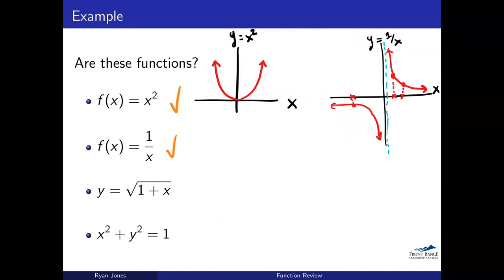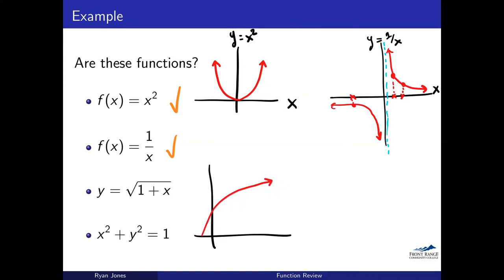Now we've got y equals the square root of 1 plus x. The square root function looks like a parabola turned on its side, and having 1 plus x just shifts it slightly to the left. That doesn't change whether it's a function. If I pick any x and look up at the graph, there's one y and only one y corresponding to it. So this is a function.